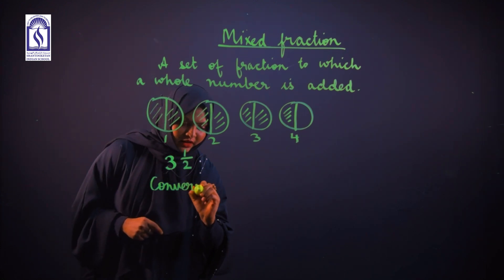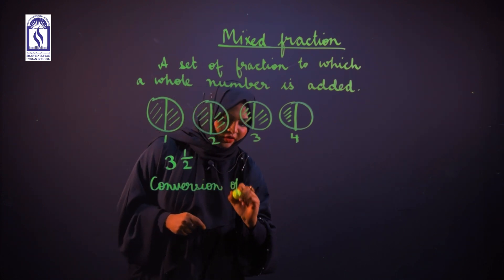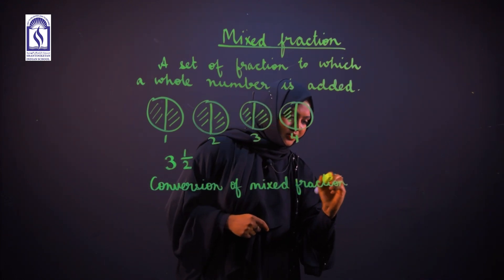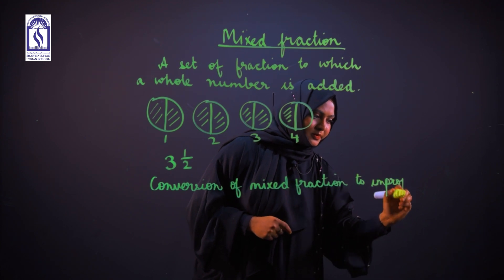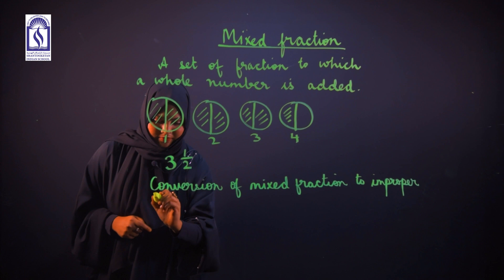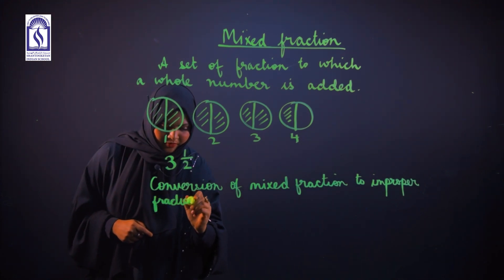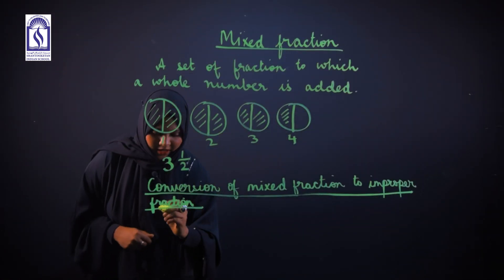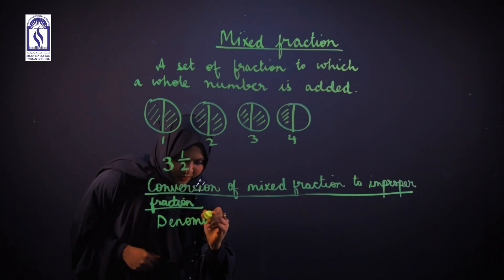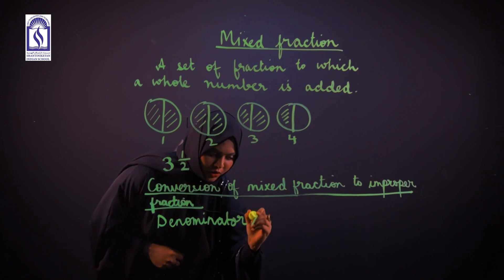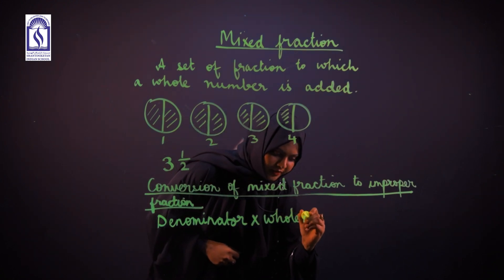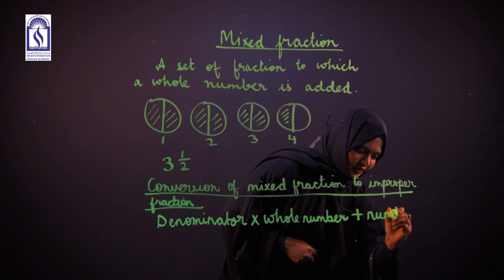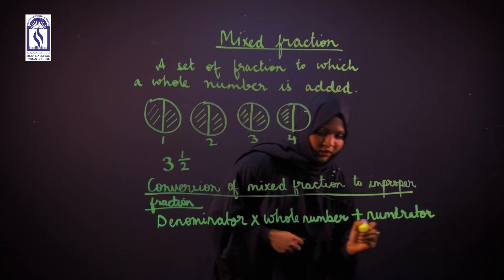Mixed fractions are always an improper fraction. Conversion of mixed fraction to improper fraction: if you multiply the denominator with the whole number and add the numerator, we will get the improper fraction.